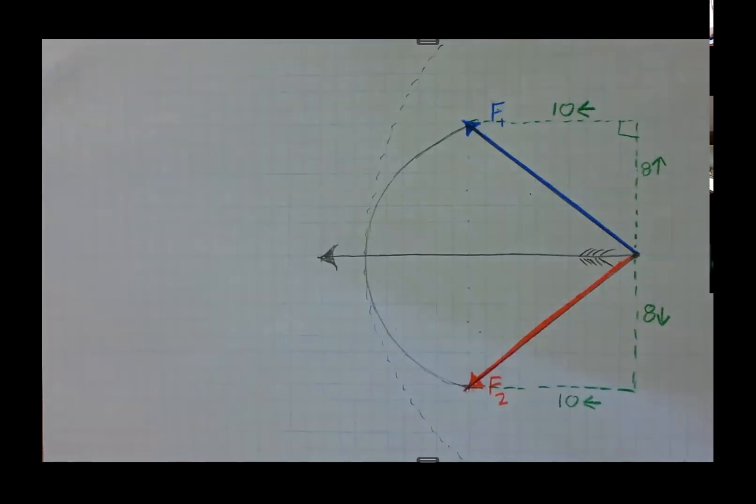Now we can add those together. First, let's add the up and down. If this is eight up, if we were doing this on a graph, is up positive or is up negative? It's positive. And so down must be negative, right? So this means eight and this means negative eight. So what happens when we add eight and negative eight? It's zero. Exactly. So that means that there's no up or down. This arrow is not going to go up. It's not going to go down.